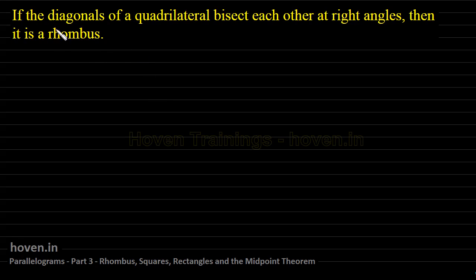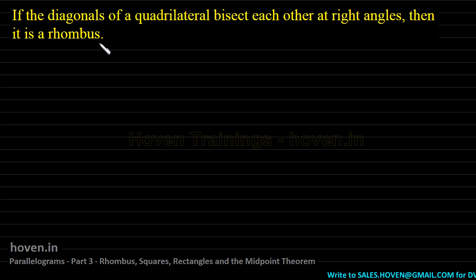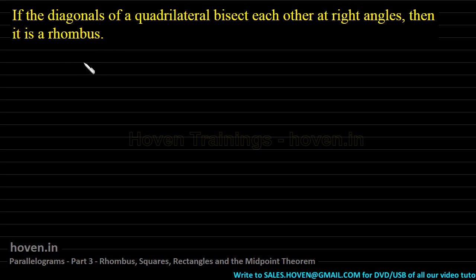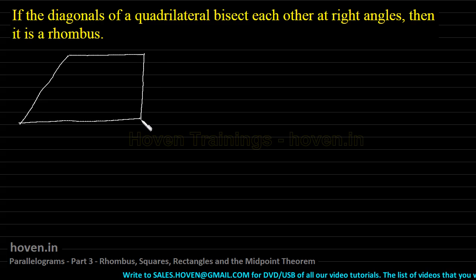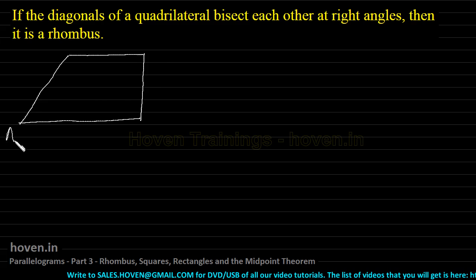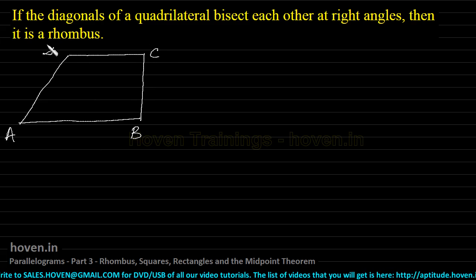If the diagonals of a quadrilateral bisect each other at right angles, then it is a rhombus. First of all, I will draw a schematic diagram, then we will proceed with the proof. Suppose this is any quadrilateral given to us, and let the corners be marked as A, B, C, and D.